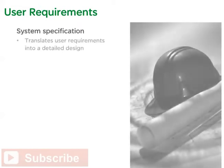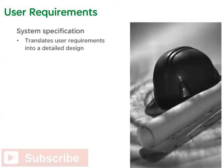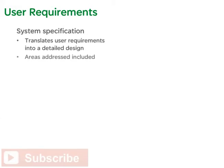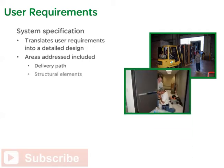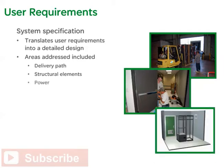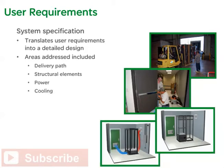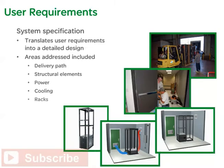To translate the user requirements into a design, the system specification and project manual incorporated a number of additional worksheets to address key elements of the design. Areas addressed included: delivery path — how the equipment gets from the loading dock to the wiring closet floor; structural elements such as existing walls, floors, roof, stairs, and doors; power, which includes distribution, source, and backup; cooling, which includes airflow and surrounding rooms and spaces; and racks, meaning the size, locations, capacities, and weight.